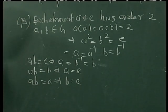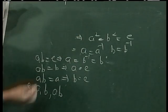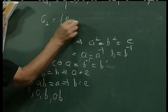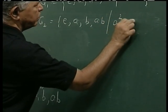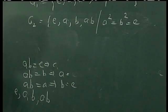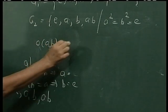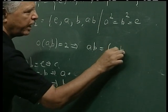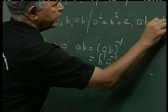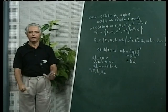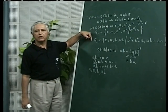That means we have 4 elements: e, a, b, and ab. I can write down the group G2 as {e, a, b, ab} where a-squared equals b-squared equals e. Now ab is not equal to e, so order of ab is 2, and that implies ab must equal its inverse (ab)-inverse equals b-inverse a-inverse equals ab. So what we prove here is that if G is any group of order 4, then its structure is either identical with G1 or with G2.